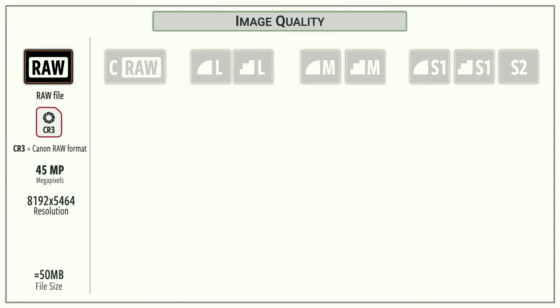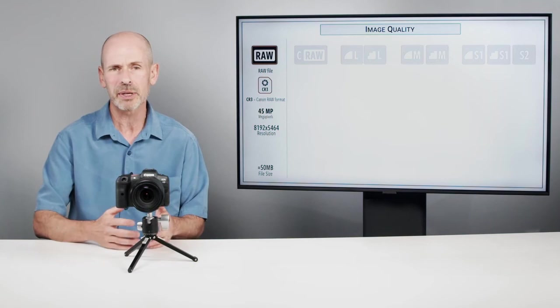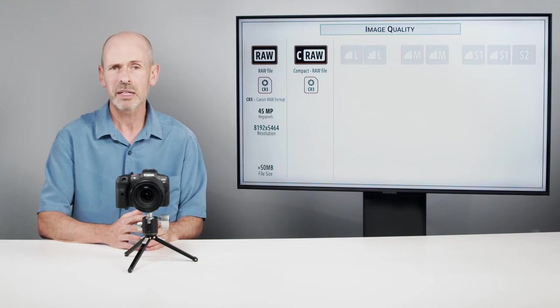Let's go through what these are. First off the full RAW this is kind of the standard RAW image that Canon's been shooting for a while it's actually in a CR3 format now 45 megapixels full resolution full dynamic range it's a great file if you want to contain the most amount of information.